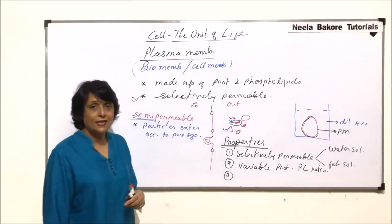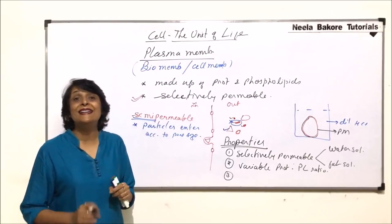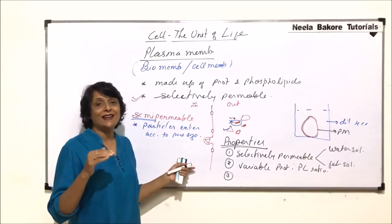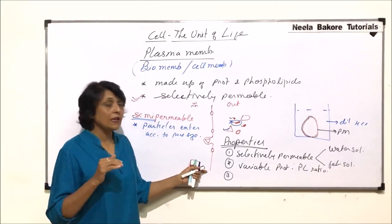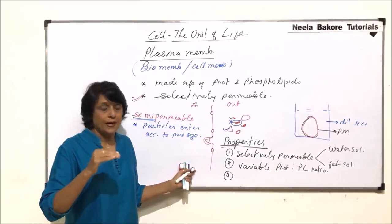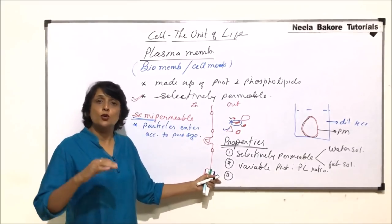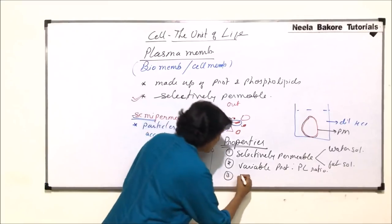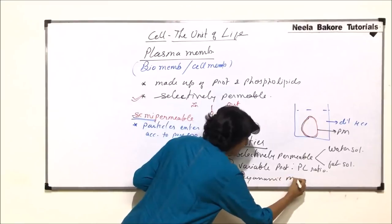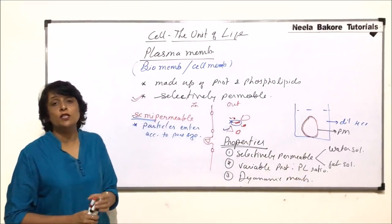Third, our plasma membrane is fluidic or dynamic. Static is a word used when the structure is rigid or firm, while dynamic is a term used when it shows variations. So plasma membrane is a dynamic membrane. These are the three properties which are shown by plasma membrane.